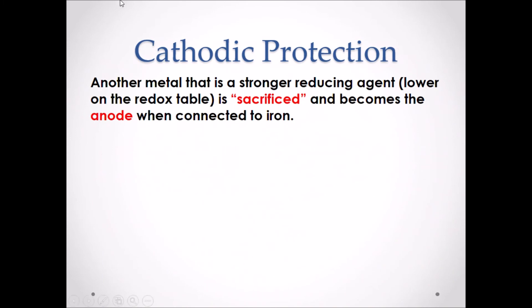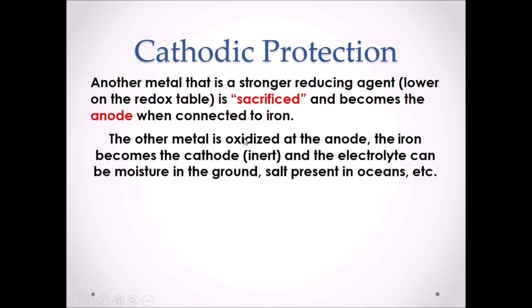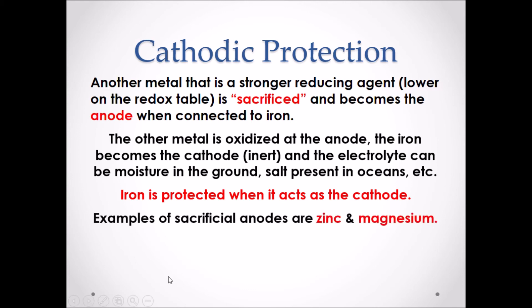That brings us to cathodic protection. Another metal that is a stronger reducing agent, therefore lower on the redox table, is sacrificed and becomes the anode when connected to iron. The other metal is oxidized at the anode. The iron then becomes the cathode which will be inert and the electrolyte can be moisture in the ground or salt present in the oceans. Iron is protected when it acts as the cathode because it is not going through oxidation. Examples of sacrificial anodes are zinc and magnesium. Note how both substances are stronger reducing agents when compared to iron.